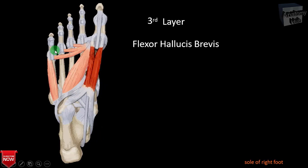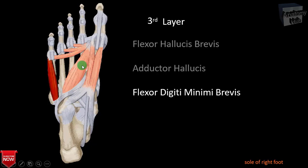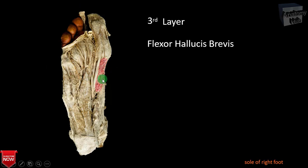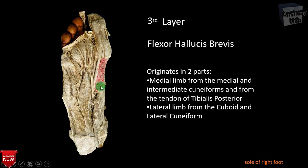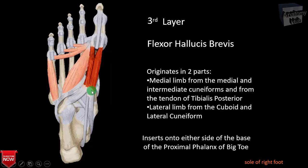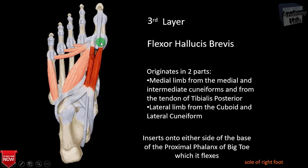The third layer consists of three muscles: the flexor hallucis brevis, the adductor hallucis, and the flexor digiti minimi brevis. The flexor hallucis brevis takes origin in two parts — a medial limb from the medial aspect of the medial and intermediate cuneiform and from the tendon of the tibialis posterior, and a lateral limb from the cuboid and the lateral cuneiform bone. It inserts into either side of the base of the proximal phalanx of the big toe, and flexes the big toe.